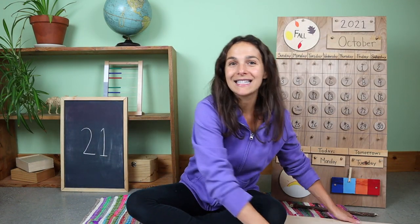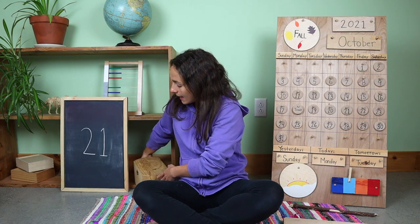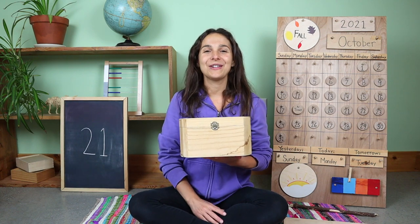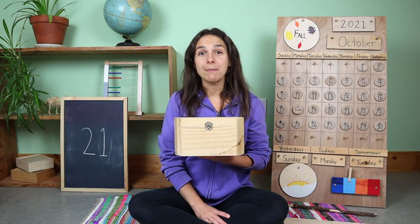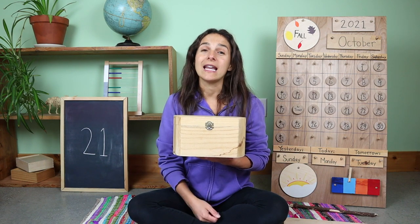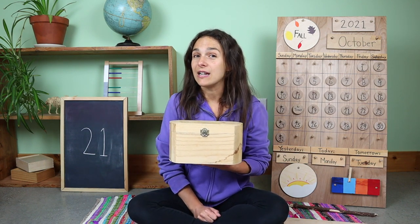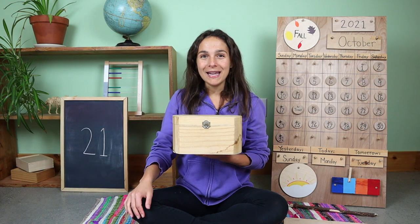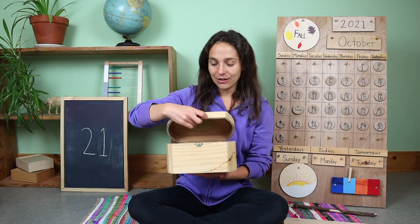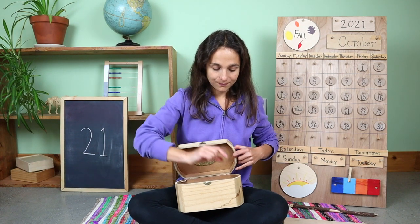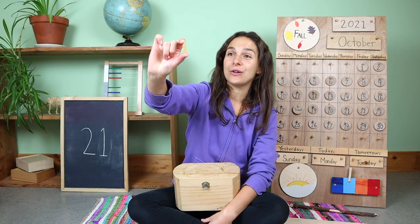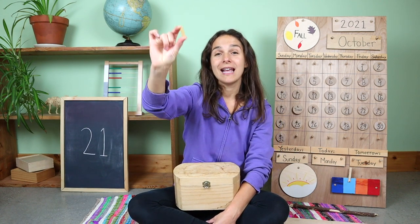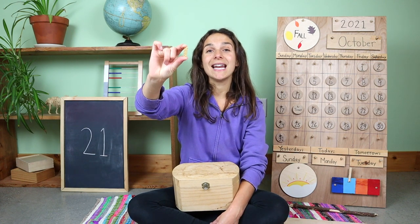I wonder what we'll find today inside of the letter box. It's something that starts with the letter N. Here's your first clue: this is a type of food. It's usually eaten with tomato sauce. And another word for this is pasta. What could it be? Let's take a look. This is a noodle, also called pasta. I like to eat tomato sauce with my noodles. Noodle starts with the letter N.